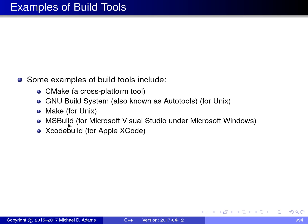MS Build is a build tool that is part of Microsoft Visual Studio, and Xcode Build is a tool that is part of Apple Xcode. Of the tools mentioned here, CMake has the best cross-platform support, i.e., it supports the largest number of operating systems and compiler tool chains. The level of cross-platform support is often an important consideration when selecting a build tool to use for a particular project.